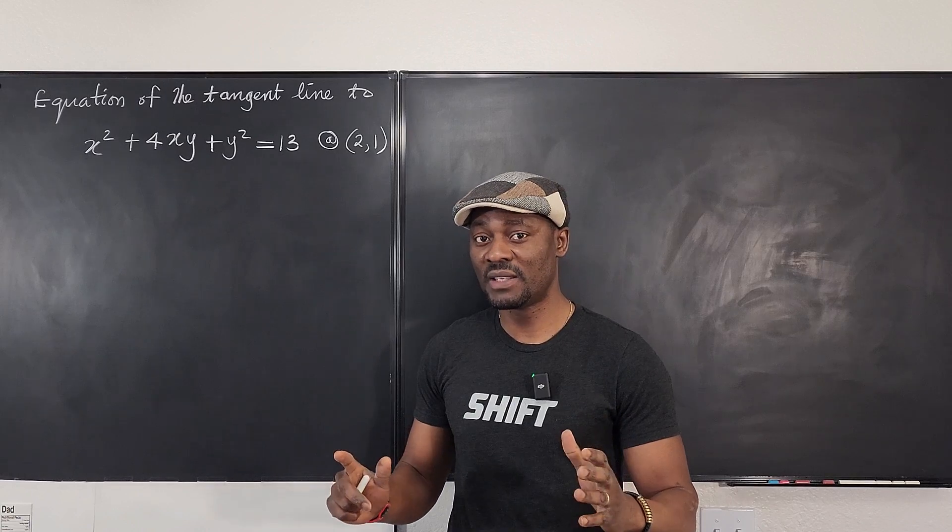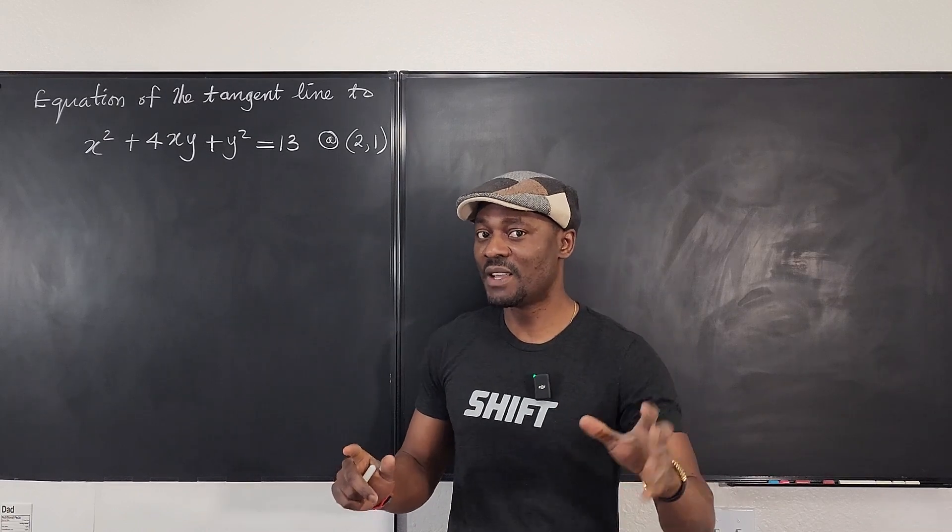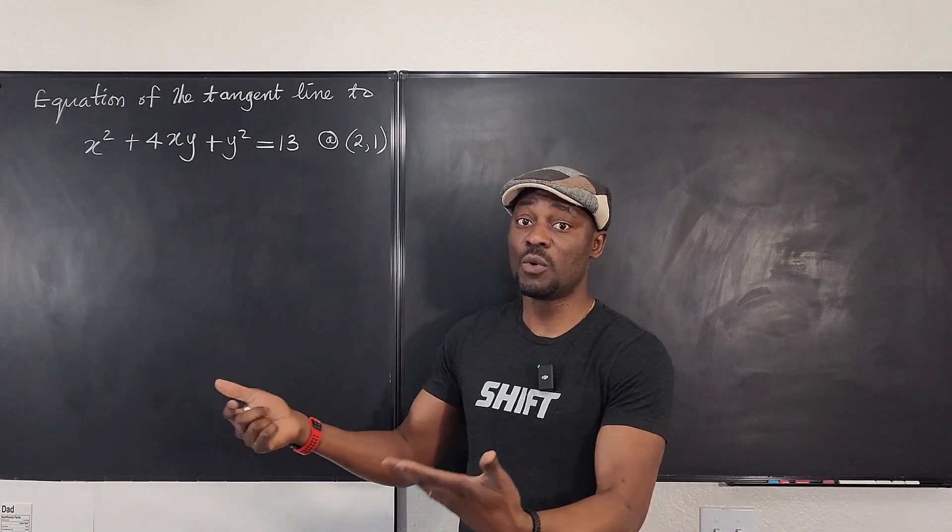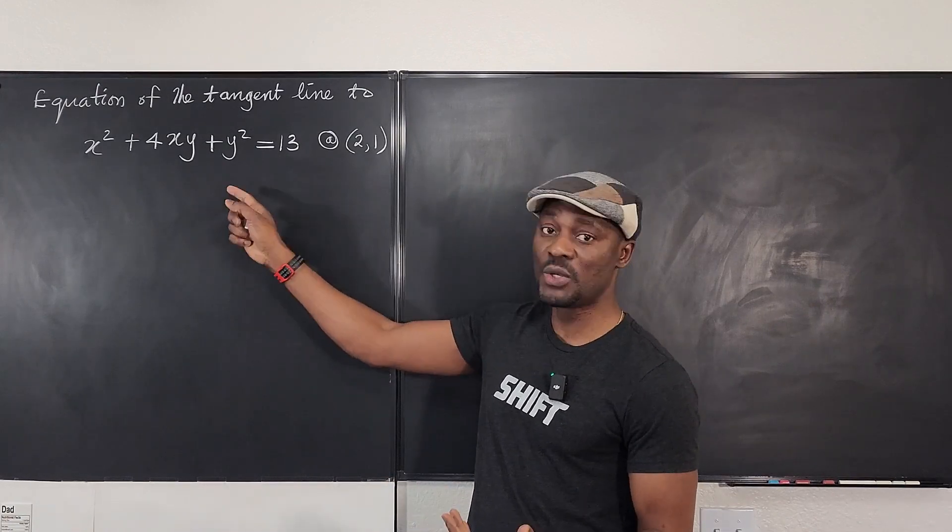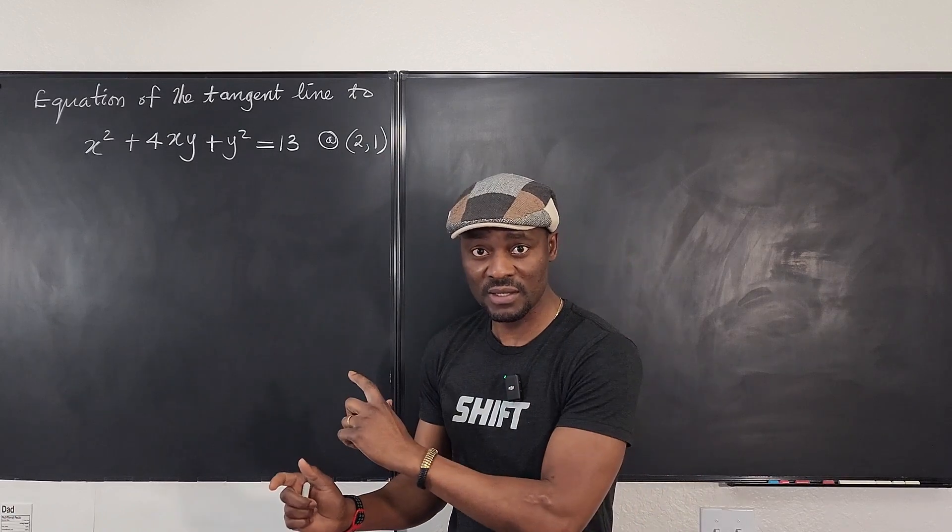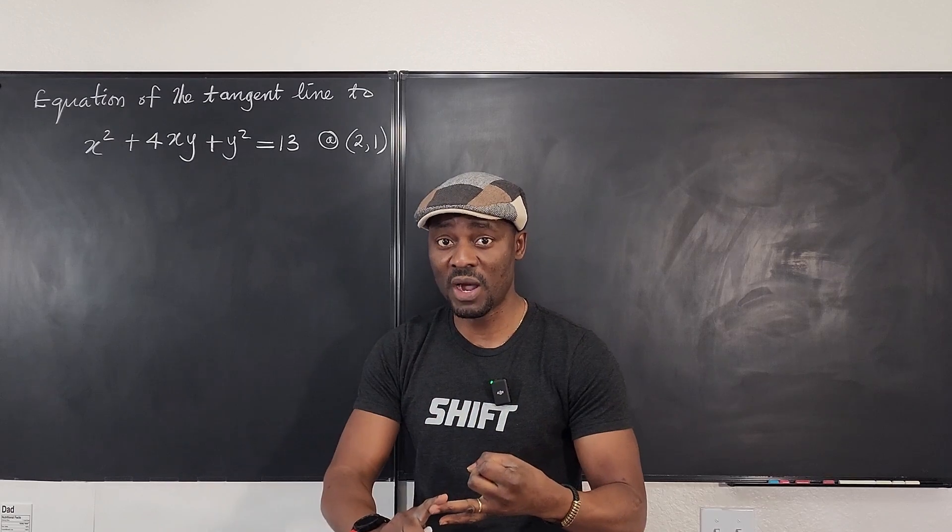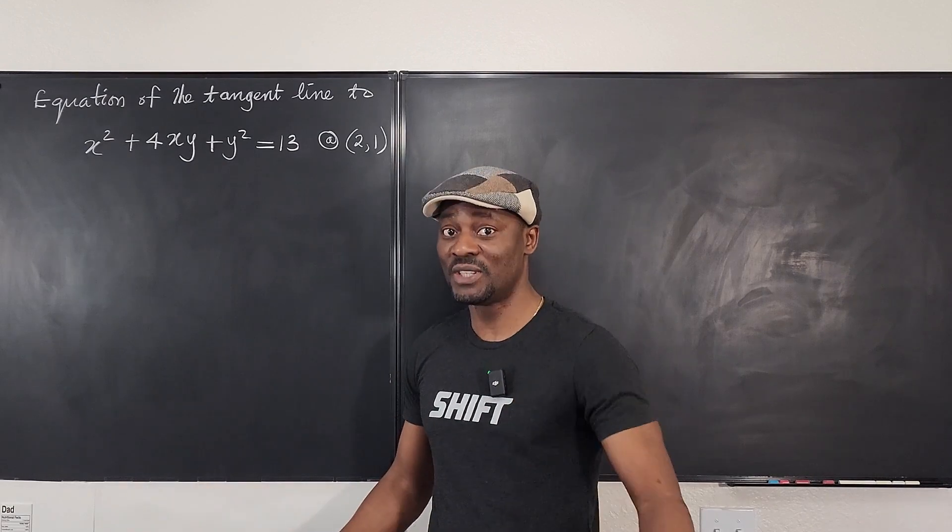Usually a problem like this would say find the equation of the tangent line at a point or when x equals 2, for example, and then it will be your job to know what y is going to be. But to answer this question, you need to have a point where you have the value of x and the value of y, and you have a function that you need to differentiate.